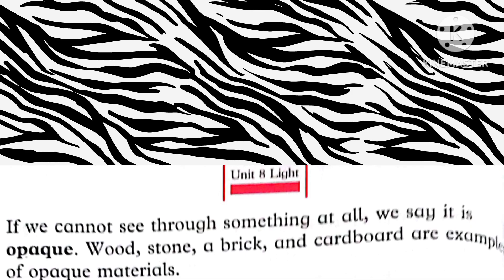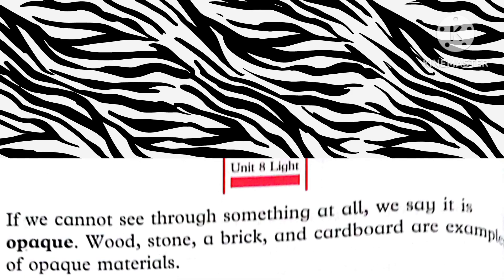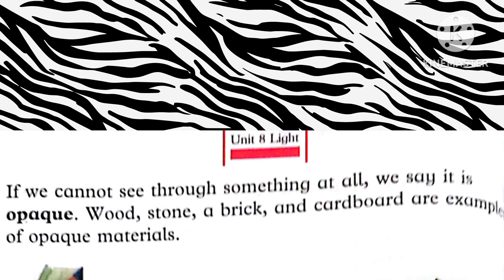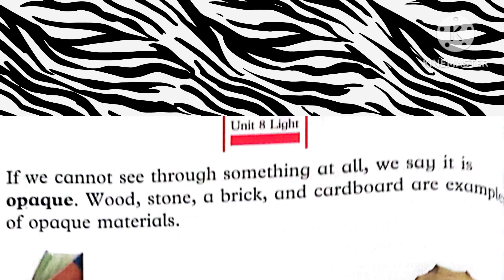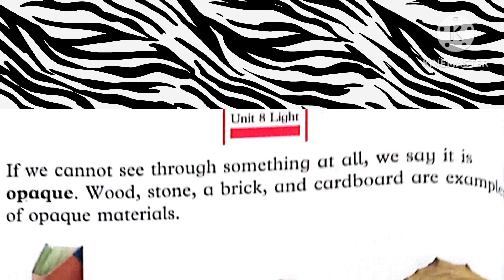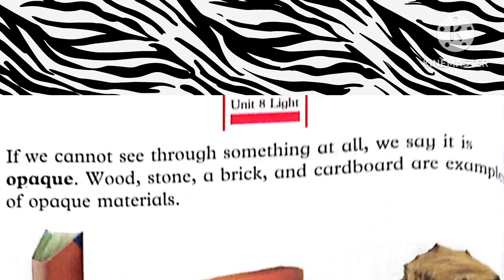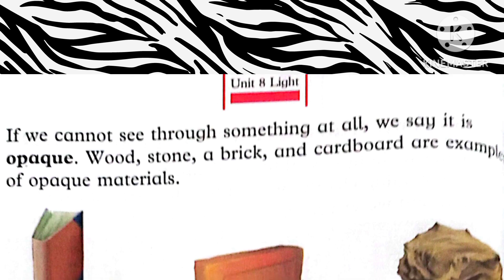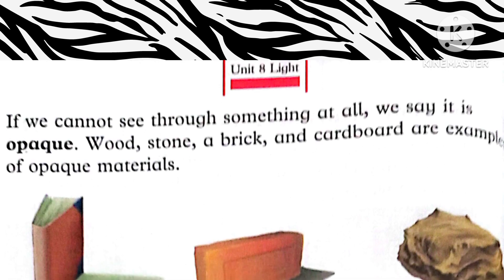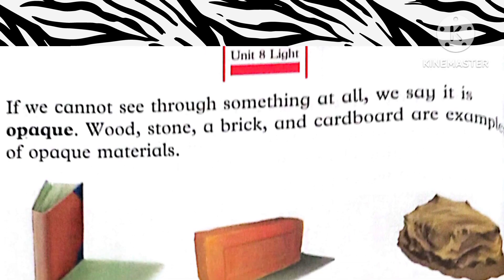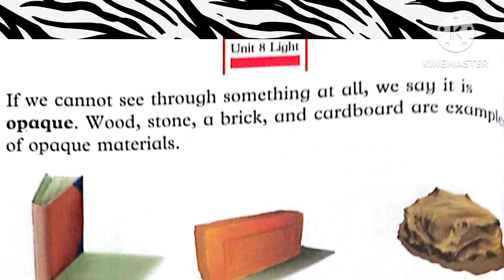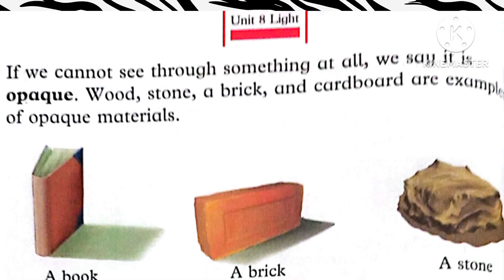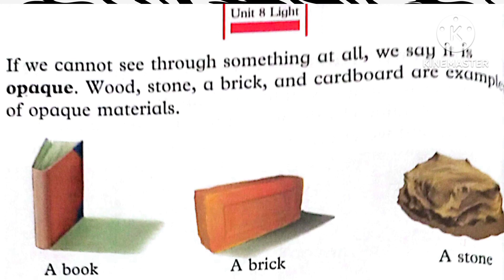If we cannot see through something at all — if we can't see anything on the other side — we say it is opaque. Wood, stone, brick, and cardboard are examples of opaque materials. These objects do not let any light pass through them.